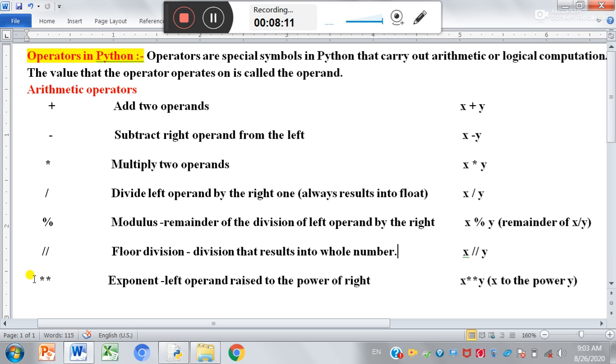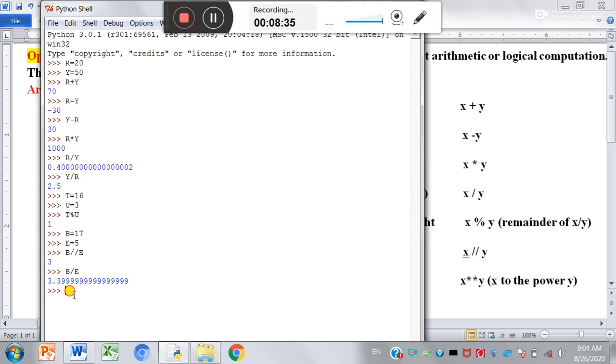Now last operator is double asterisk, which is known as exponent. So what does it do? Left operand raised to the power of right. Suppose we want to write x double asterisk y. How will it work? Suppose we want to calculate 2 raised to the power 3. So the output will be 8. So you can see here the output is 8.